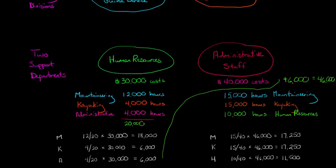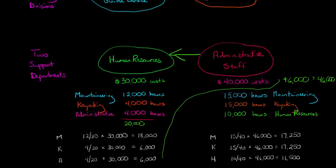Here's the key of the reciprocal method. We now allocate the cost of the admin staff department — but remember, admin staff also provides services to HR, so we're going to allocate some back to HR. HR just went to zero, from $30,000 to zero because we allocated the whole $30,000 in cost. But now we're going to allocate some back, using this $46,000.